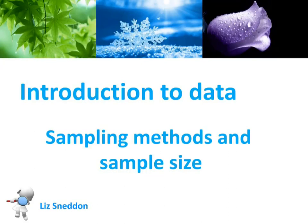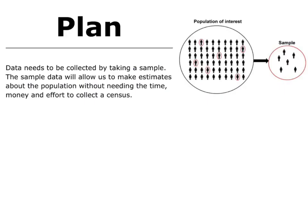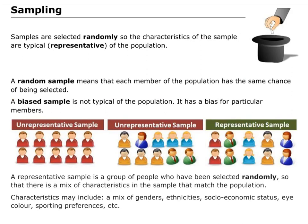Let's have a look at sampling methods and sample size — the general ideas. In our planning section, we have an investigation question and now we want to plan how we're going to collect the data. We're going to collect it using some kind of sample, which will allow us to make an estimate about what is happening in our population. Because doing a census takes a lot of time and costs a lot of money, that's why we take samples. There are two general types of samples.